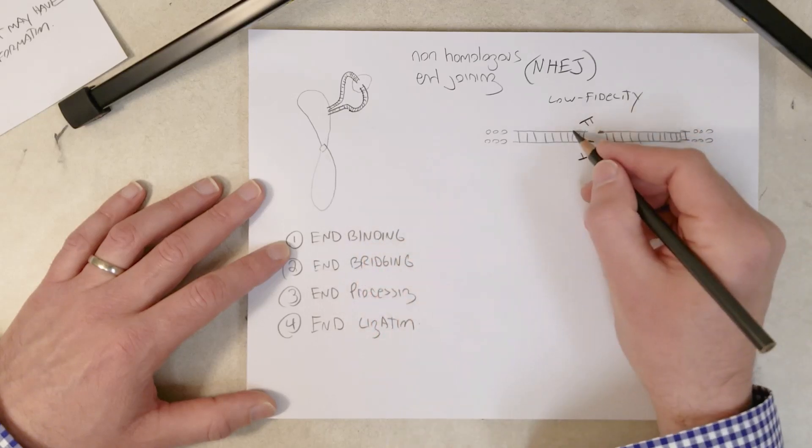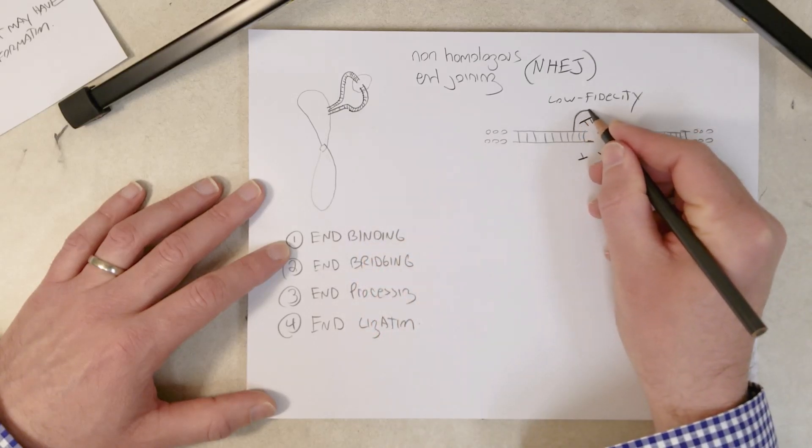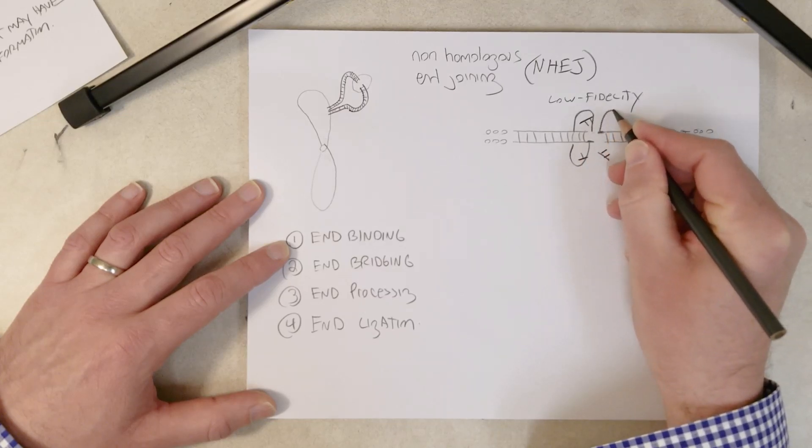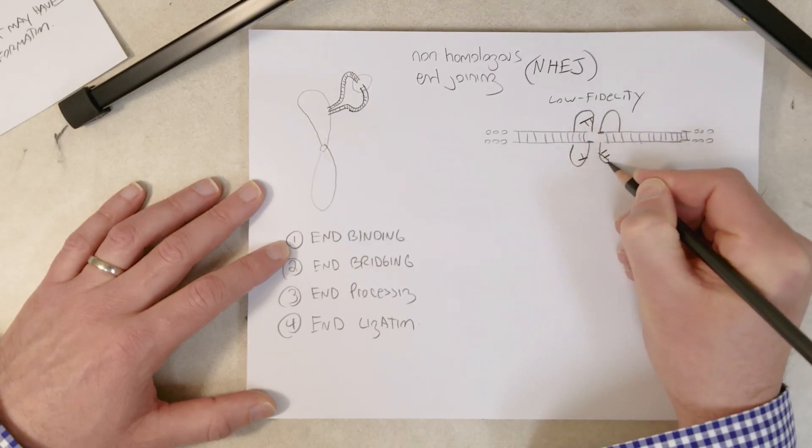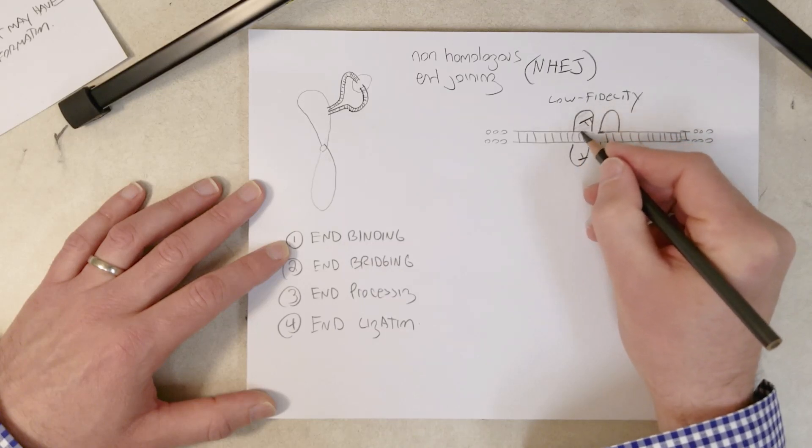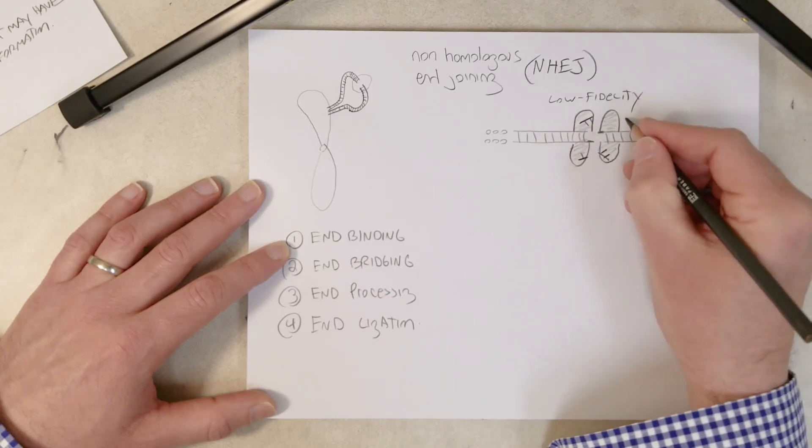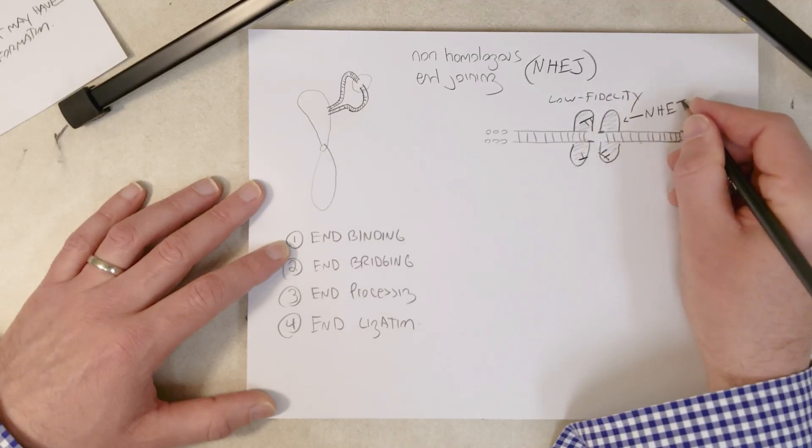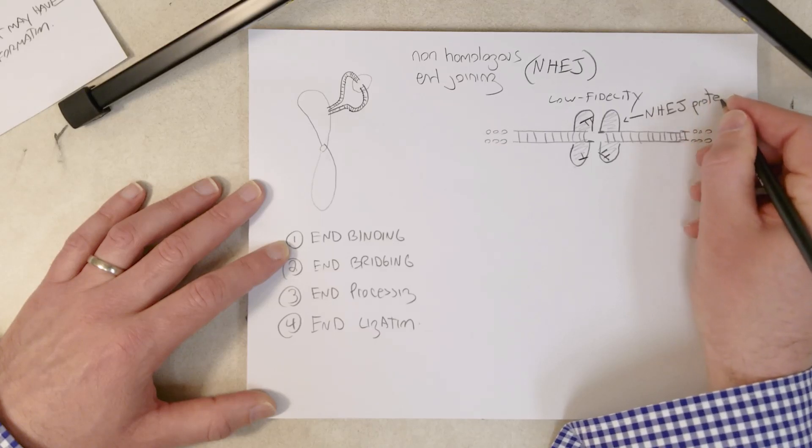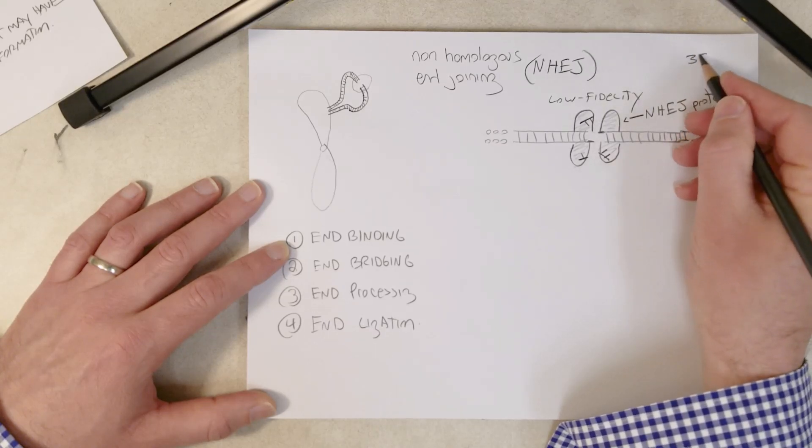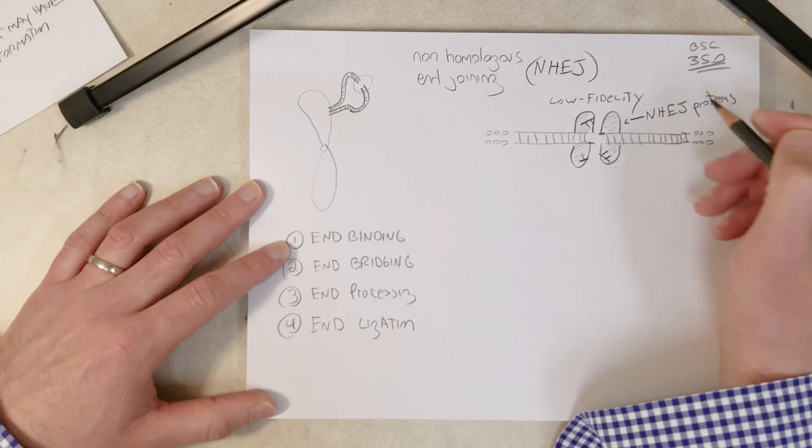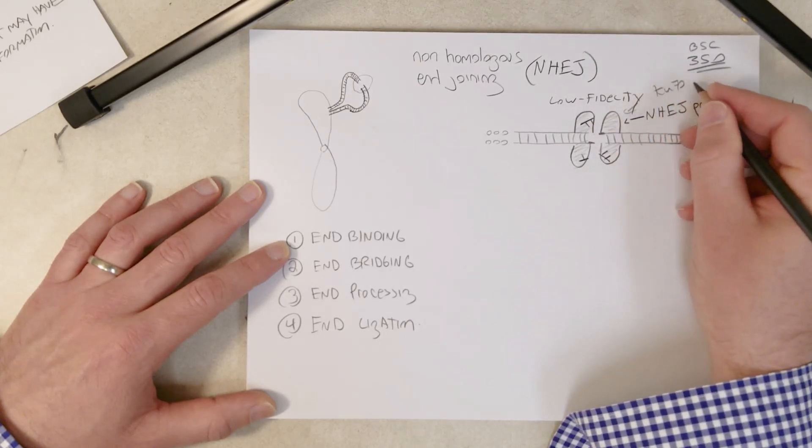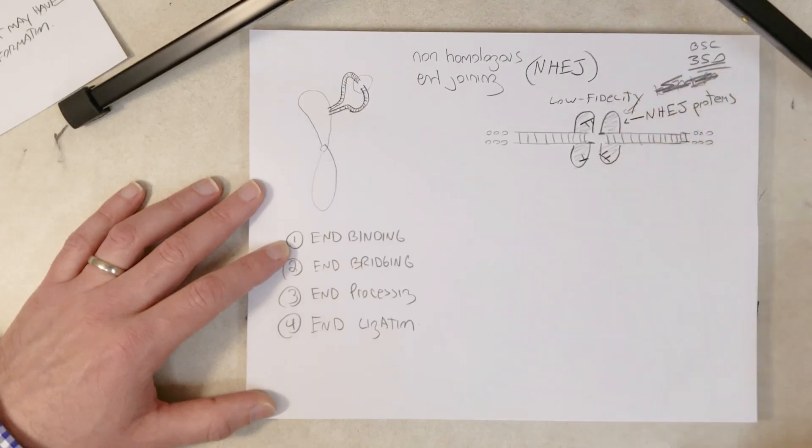First step: end binding. So NHEJ proteins come in and bind the ends. These are kind of close together. I wish I diagrammed them a little further apart. So these are, and we're just going to generically refer to all of these proteins as NHEJ proteins. Again, we will talk about this in detail in BSC 350 if you are interested. I think these are Ku proteins, Ku70, Ku80. We don't need those names for this course.